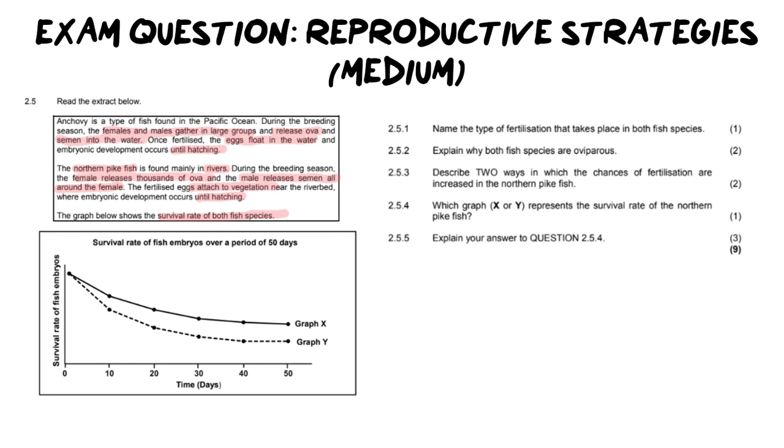This is another reason why I selected this particular question - it is about reproductive strategies and improving survival rate. But if you have natural selection knowledge in the back of your head, this will make this particular question easier. It says survival rate of the fish embryos over 50 days and they have graph X and Y. They don't actually tell you which species is which. I'm hoping that you would be able to guess which one is which based off the information provided here. They both have external fertilization, right? But there's a key difference between the two.